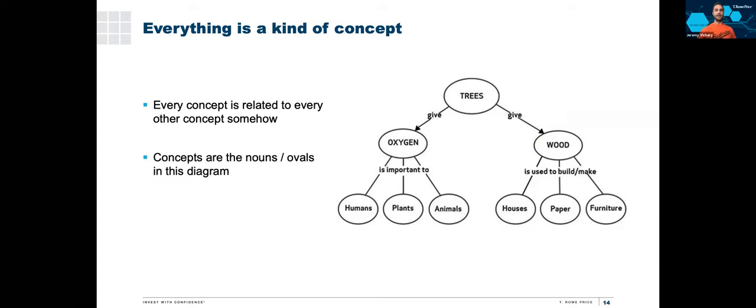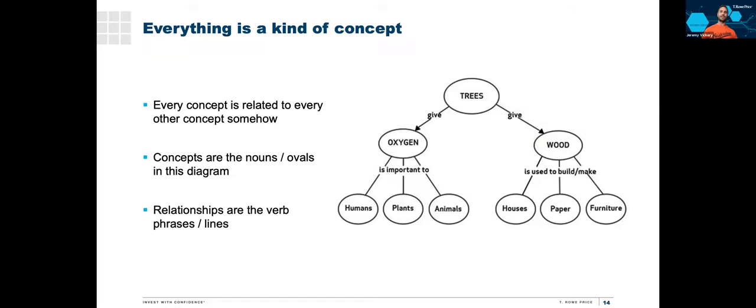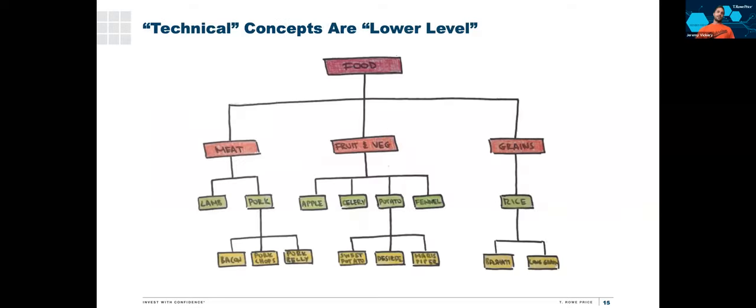Everything is a kind of concept, whether that's simple things like trees, oxygen, wood, things we're very familiar with, or whether that's really complicated technical things, everything's a kind of concept. And every concept is related to every other concept somehow. So you can see in this diagram, right, the nouns or the ovals, right, these might be called the nodes, depending on where you're coming at this from. Those are the concepts. And the relationships, relations, edges, right, you might hear different terminology used if you're presented with a concept map like this. But those are the verbs. And that's it. Those two things. Concepts are related to other concepts.